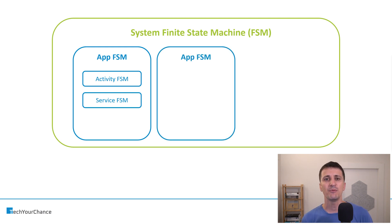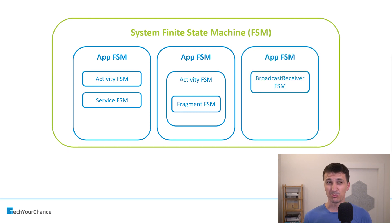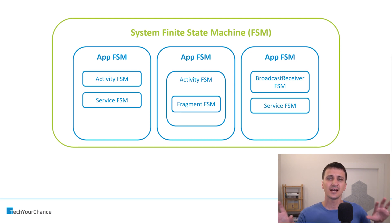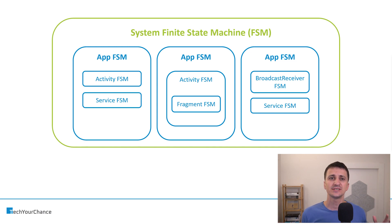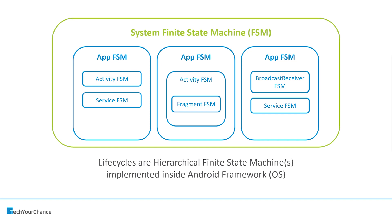The finite state machine corresponding to one single app is nested inside the finite state machine corresponding to the entire Android operating system, because the entire system might be, for example, in Doze mode, and the apps just react to that. Inside each individual app, we have additional components — for example, activities which have their own finite state machines, or services which have their own finite state machines. We don't have just one single app; we have multiple apps running on the device. Other applications can have an activity finite state machine, and within that, a fragment finite state machine. Where does this finite state machine reside? Not inside the application — it resides inside the Android operating system, inside Android framework. Android framework manages the state of these applications by itself.